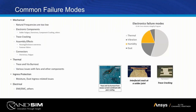Looking at common electronics failure modes, thermal cycling and thermal effects are a huge driver of failures in these environments, with vibration, humidity, and dust taking up a smaller portion. Beyond thermal cycling, we look at natural frequencies of PCBAs to understand if there will be coupling with the next higher assembly, solder fatigue of component joints and any cracking that may occur, how traces are behaving and heating up, and how the next higher assembly is going to behave as well.